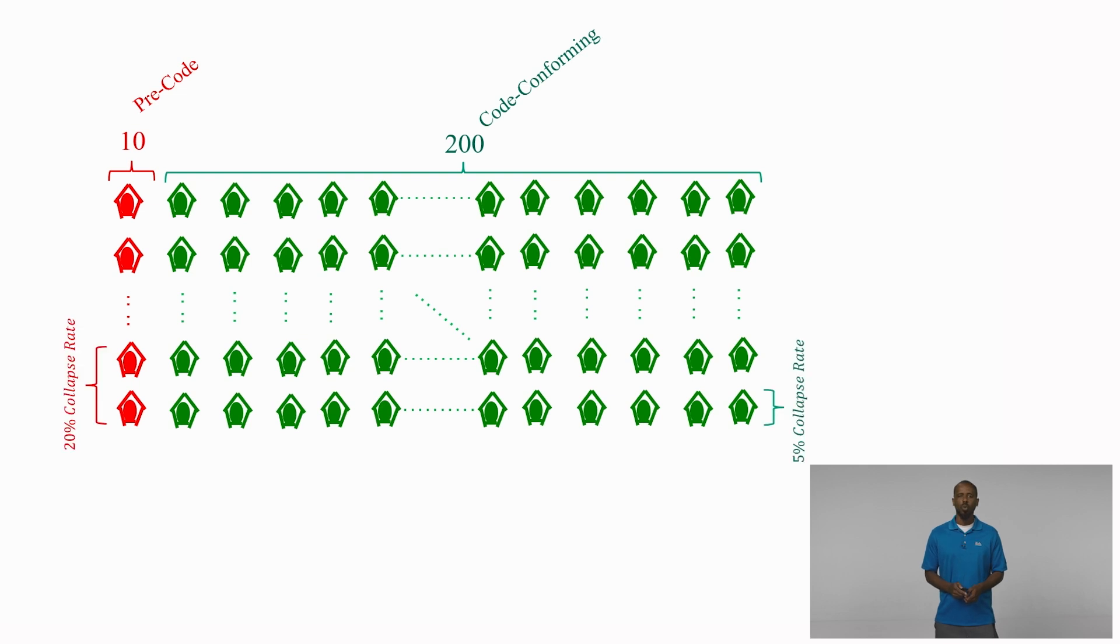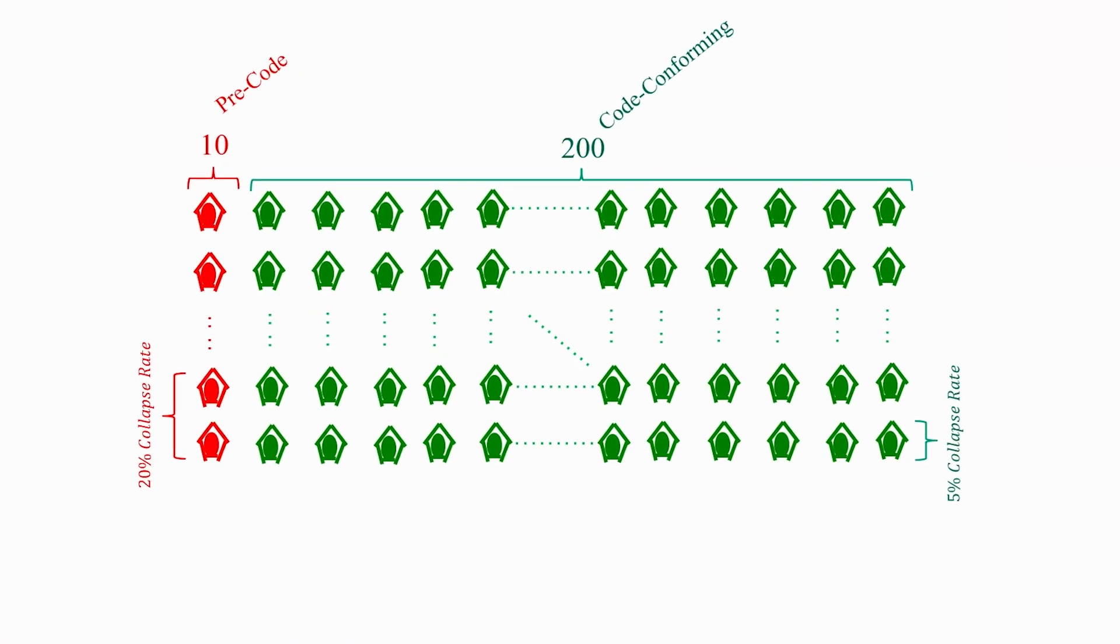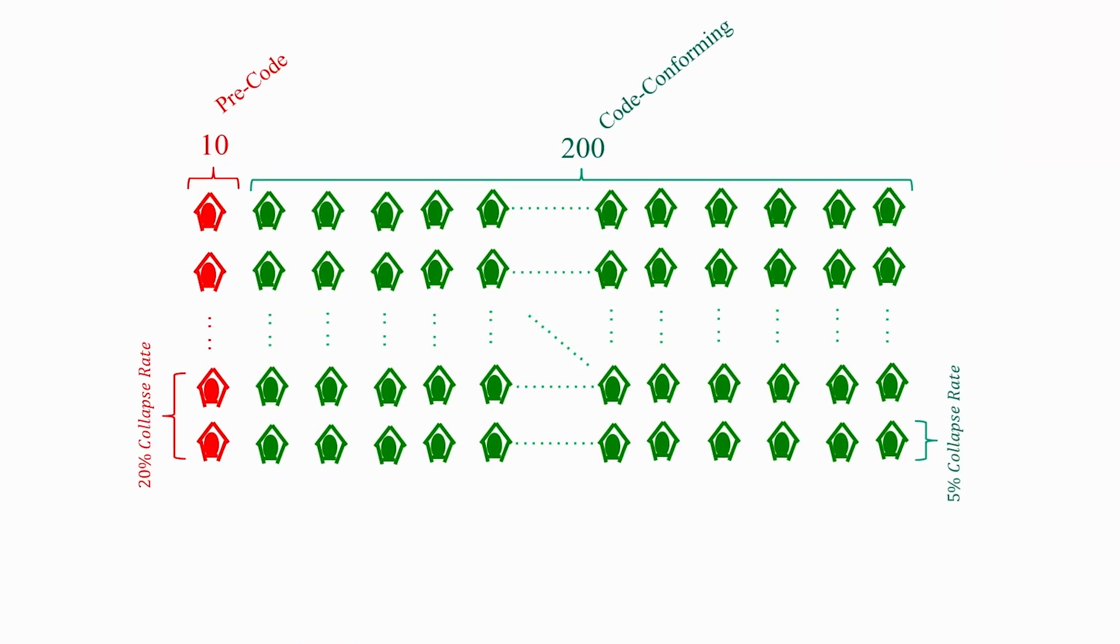Now one of the things that drove Halisi's initial reasoning about the likelihood of which of the two types of buildings collapsed was her knowledge of performance-based earthquake engineering. She knew that for a given level of shaking, a pre-code building has a much higher likelihood of collapse than a code conforming building.